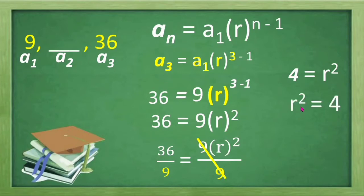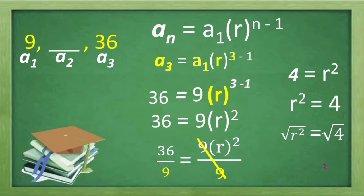We have r squared is equal to 4. To remove the exponent 2, we extract the square root of both sides of the equation. Therefore, the square root of r squared and the square root of 4 gives us r is equal to positive and negative 2.